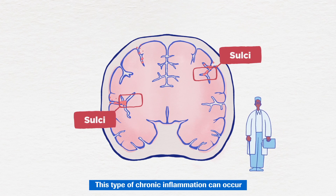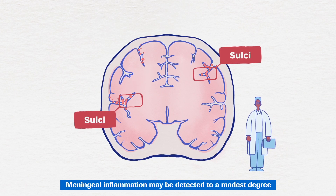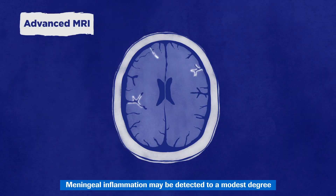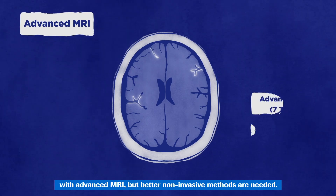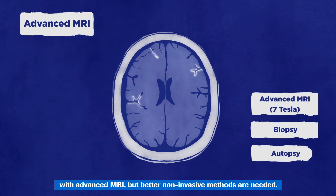Where flow of cerebrospinal fluid slows or pools, this type of chronic inflammation can occur without any obvious signs of blood-brain barrier disruption. Meningeal inflammation may be detected to a modest degree with advanced MRI, but better non-invasive methods are needed.